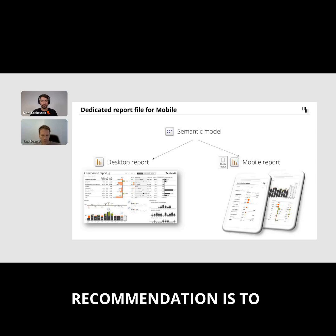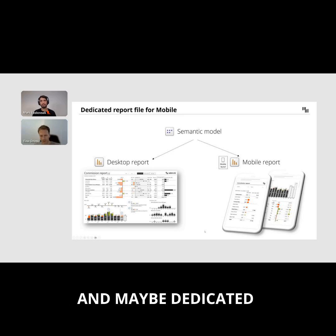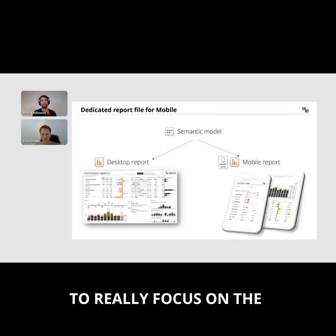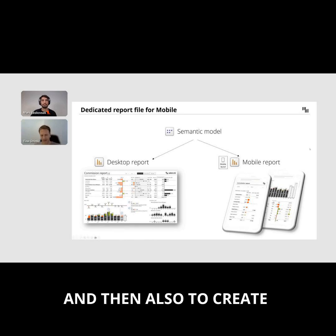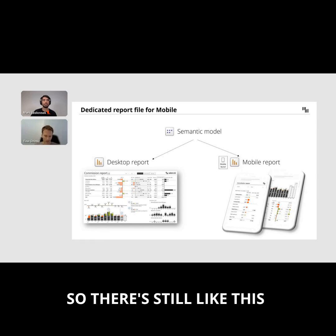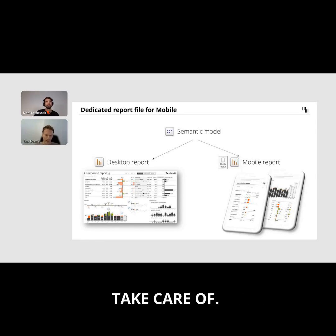Our recommendation is to create a dedicated report just for mobile, and a separate dedicated report for desktop. Yes, that means two different reports, but it enables you to really focus on the right things when designing mobile reports — having proper mobile layouts and visualizations suitable for that format. At the end, you still have the same semantic model in the background, so there's one source of truth and only one data model to take care of.